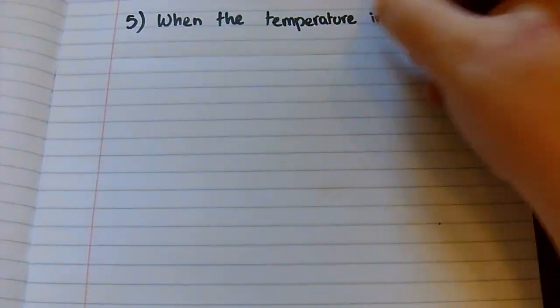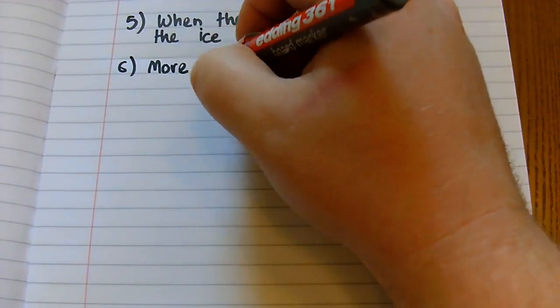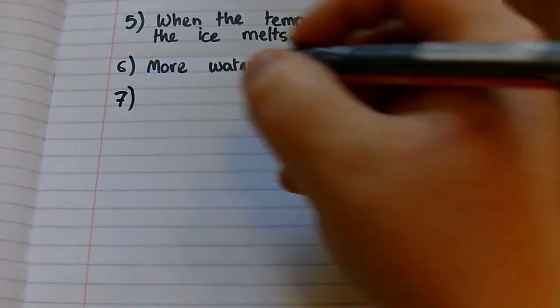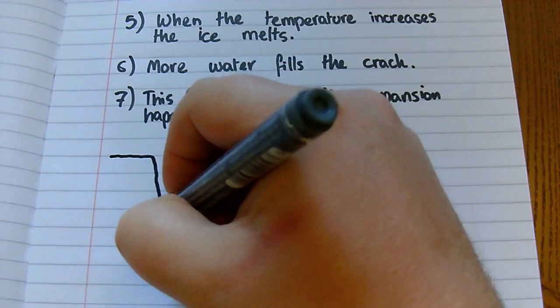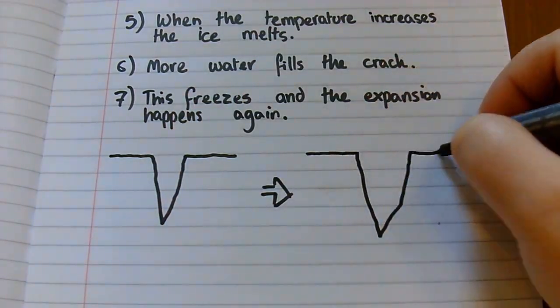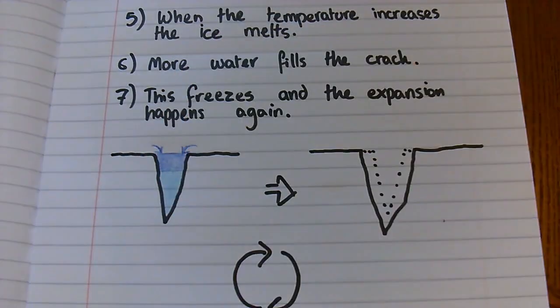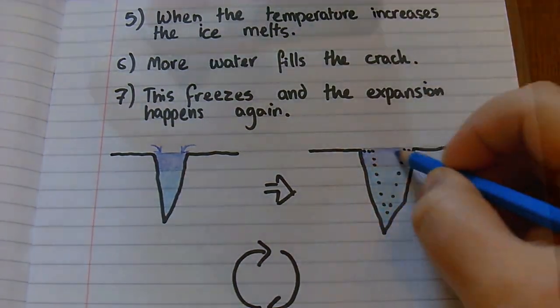This process repeats itself when ice in the cracks melts and more liquid water fills the bigger crack up. This then freezes, gets larger, opens the crack wider, thaws out, fills more, freezes, expands, opens, melts - you get the idea.